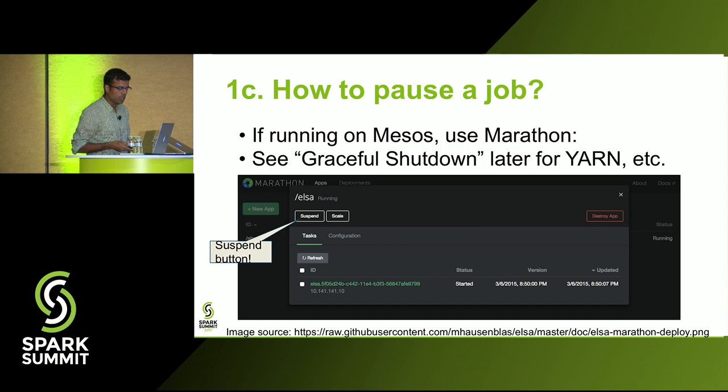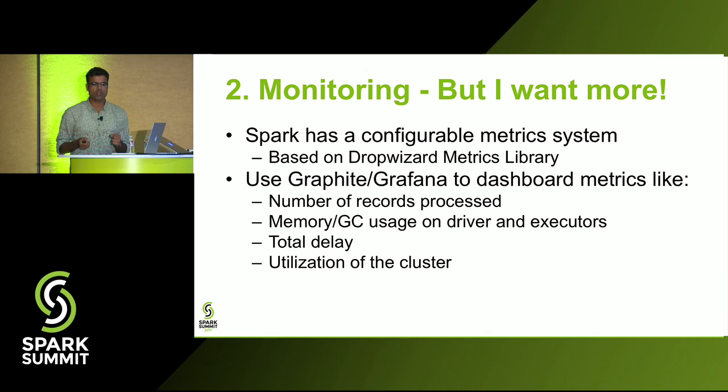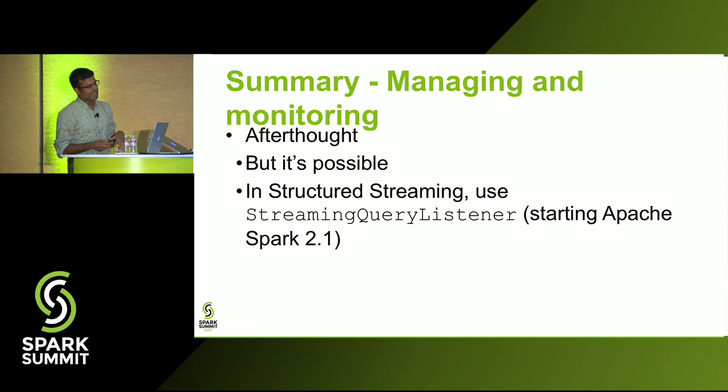If you're using Mesos and want to pause the job, you can use Marathon which has a suspend button. With YARN, there's a separate way to gracefully shut down your app. For monitoring, there's a UI showing processing time, scheduling delay, and total delay. If you want more, Spark has a configurable Dropwizard library you can hook into something like Graphite and Grafana to see dashboard metrics not exposed on the UI.